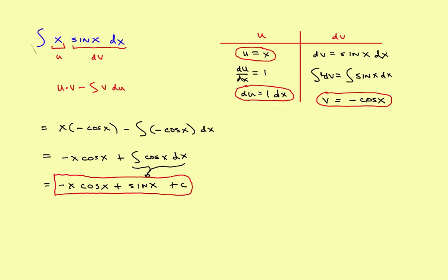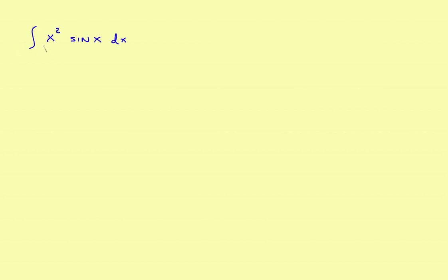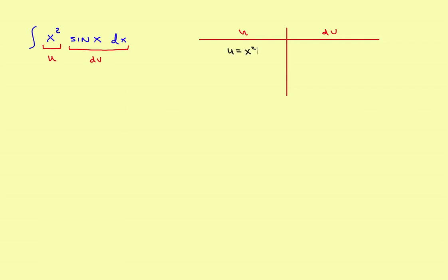In the second example, let's take a look at one that has an x squared, and that means you're going to have to use integration by parts twice to get the correct answer. The problem starts out exactly the same, and we'll still make the same choice of u and v. Our choice of u will still be the x term — so u is equal to x squared — and this is going to be the dv. So u is x squared, and dv is equal to the sine of x dx.